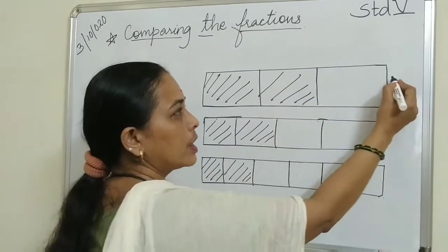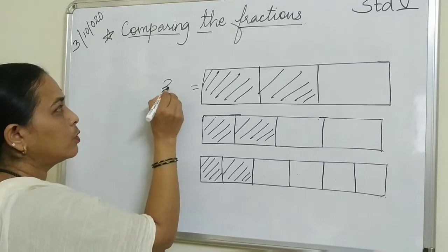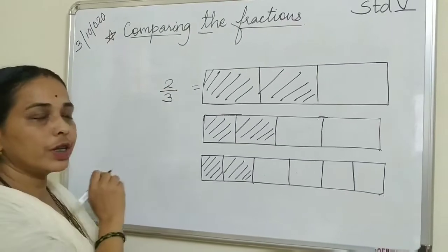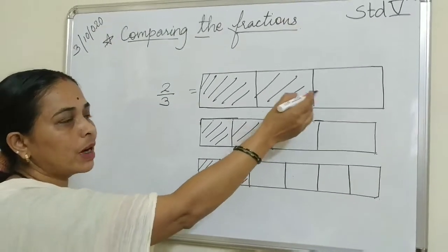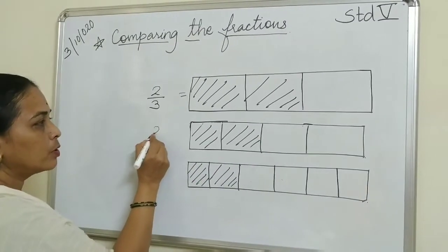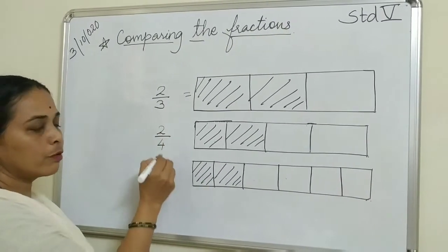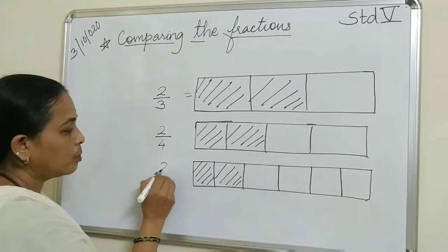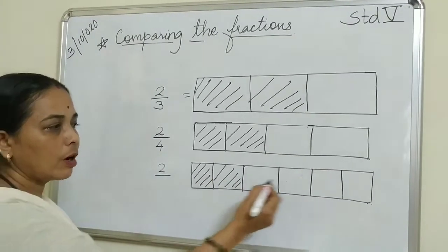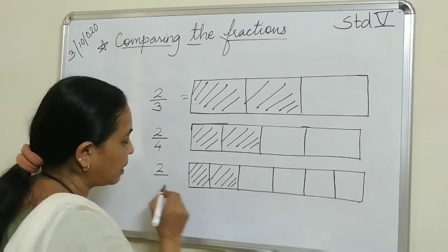How many parts are painted? In this paper strip, 2 out of 3 parts are painted. This paper strip has 2 parts painted out of 4, and this has 2 parts painted out of 6 parts.